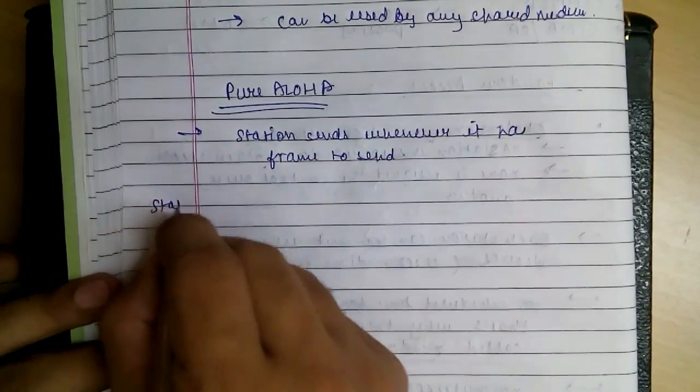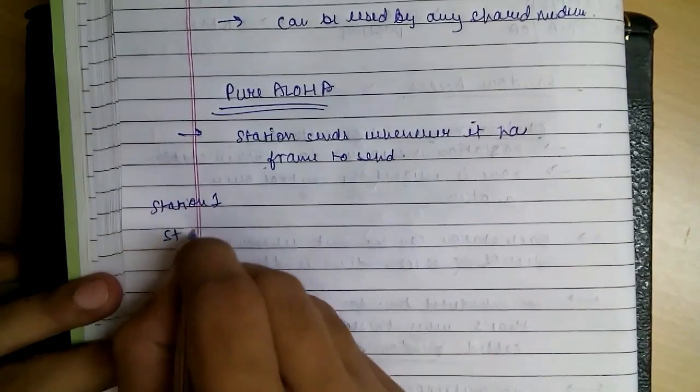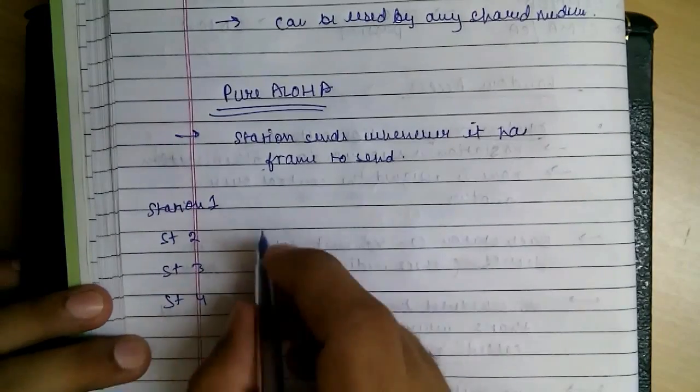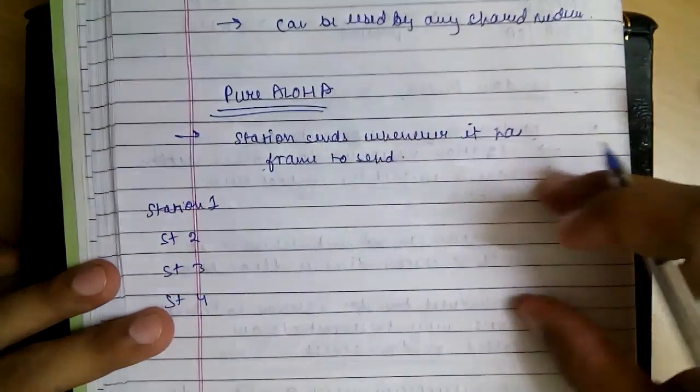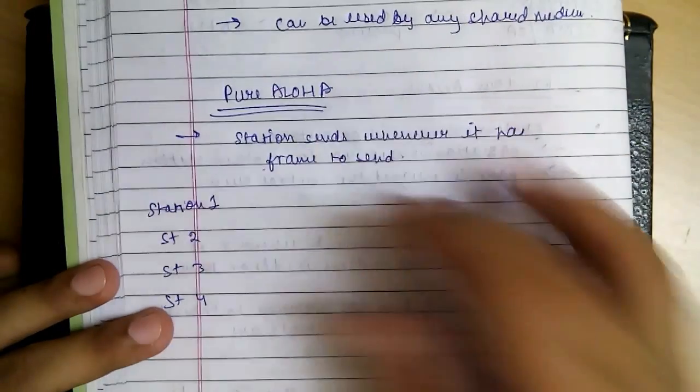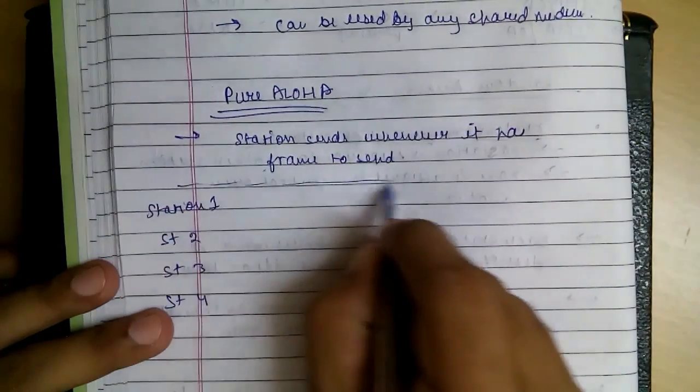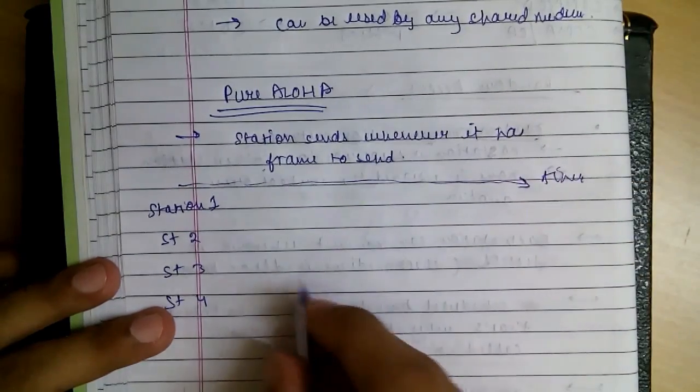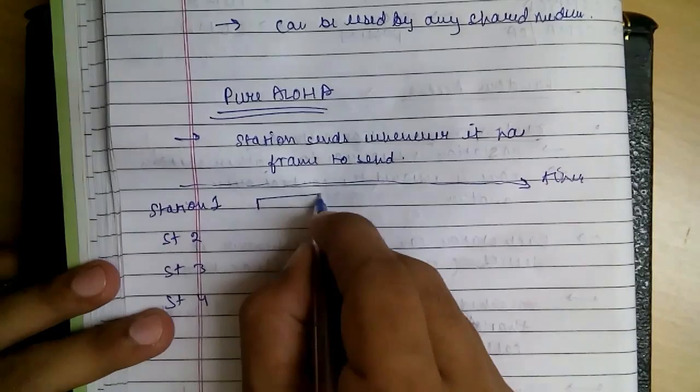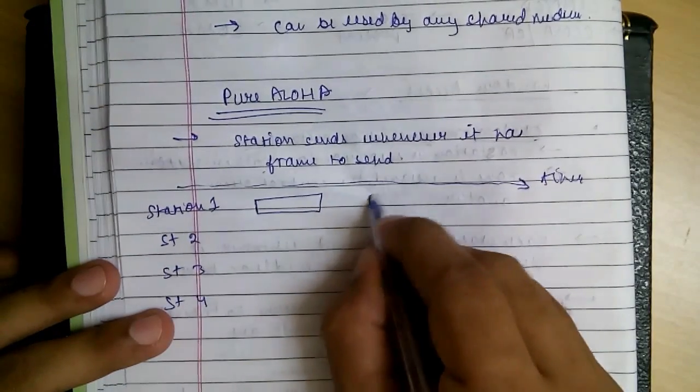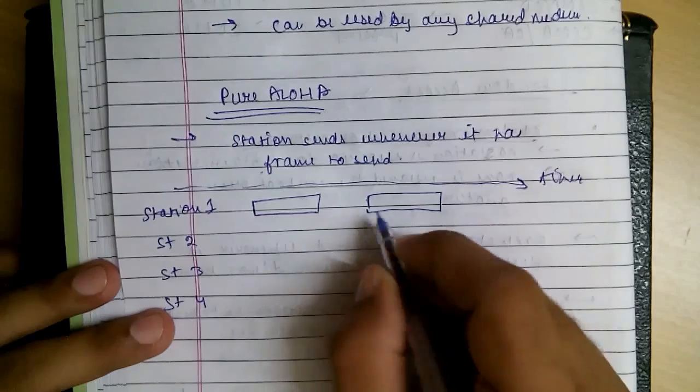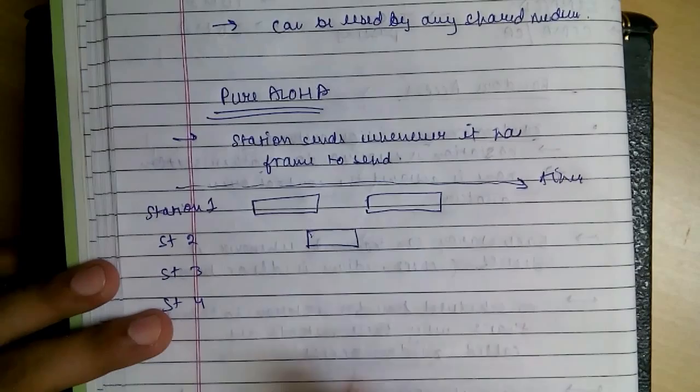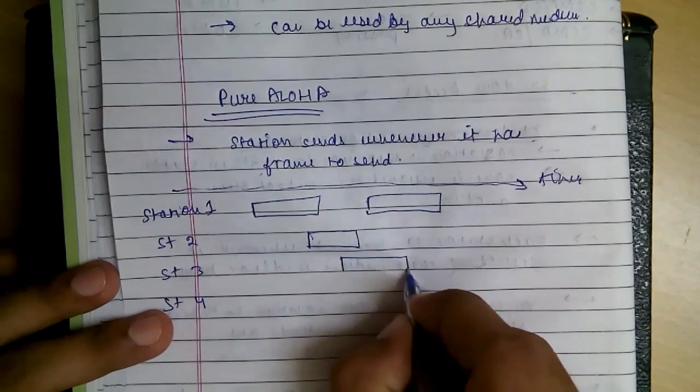Say this is station 1, station 2, station 3 and station 4. This whole is our medium and this is time. Let's say station 1 has sent a frame and it has already sent one before it. And in between station 2 has sent and station 3 also has sent.